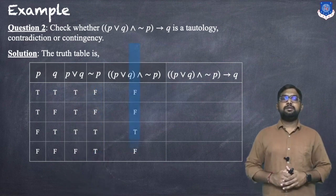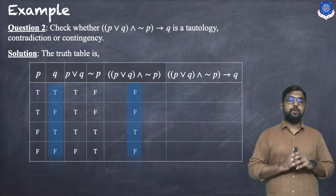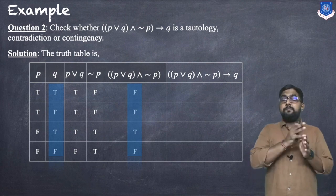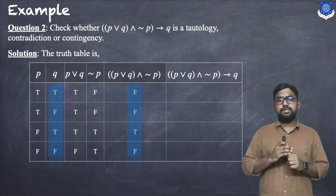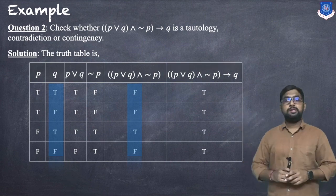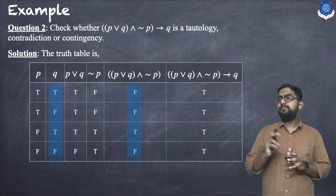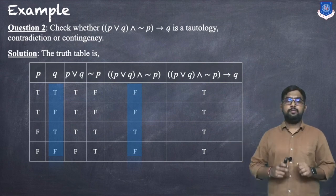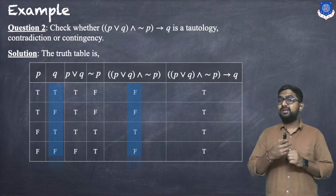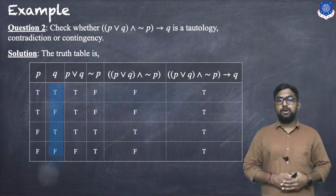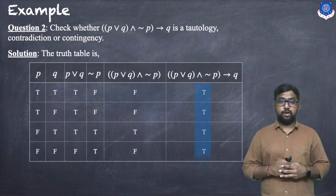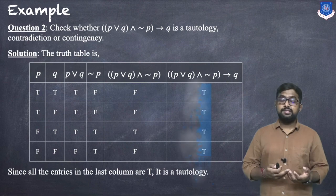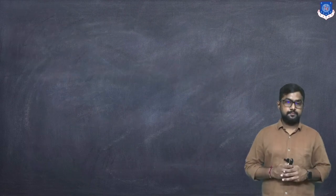For the final column, (p∨q)∧¬p → q: F→T gives T, F→F gives T, T→T gives T, F→F gives T. All entries in the last column are true, so it is a tautology.